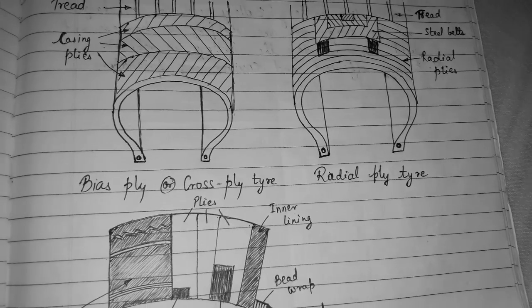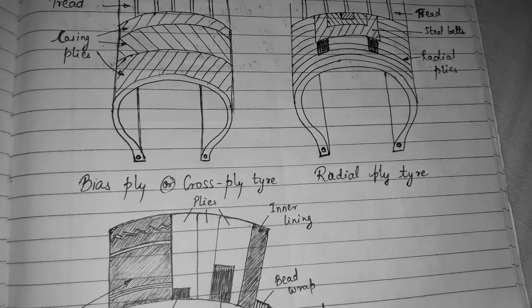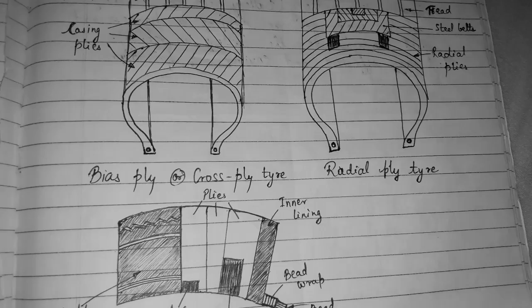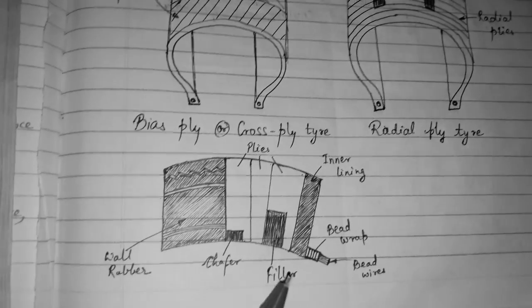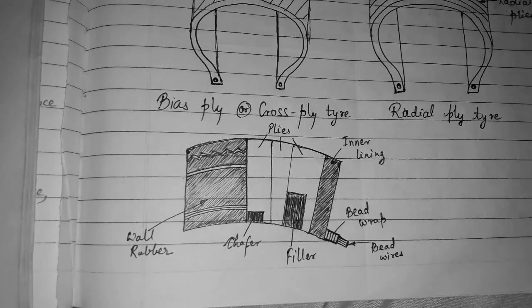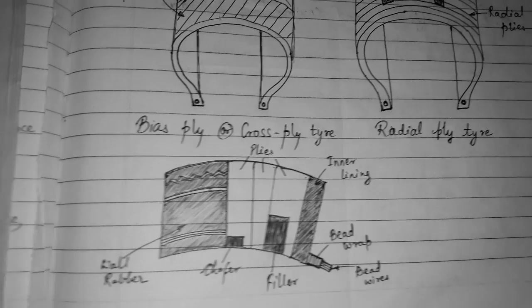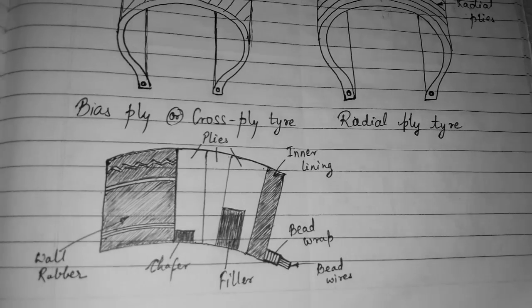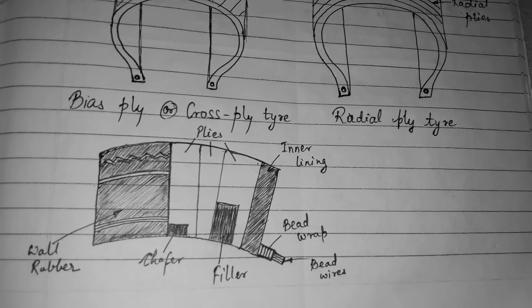There is a bead wrap and bead wires. So this was the sketch for cross ply or bias ply tire and radial ply tire and their different parts. Thank you for watching, please like, subscribe, and comment.